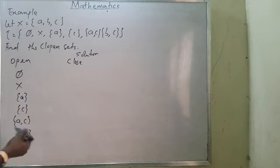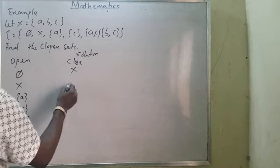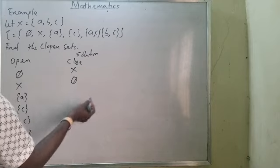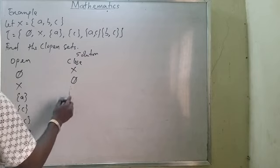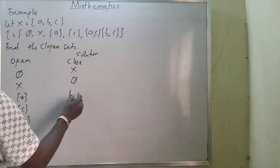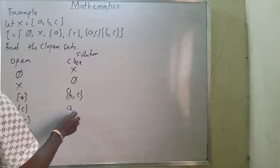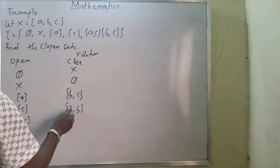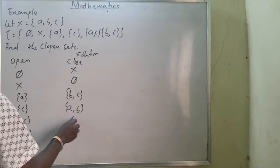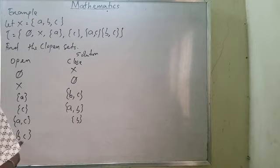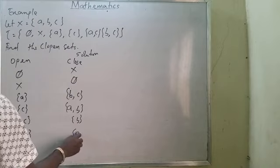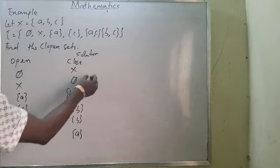My closed sets: I start with X and ∅. I've explained this in my previous video — the closed set is obtained by taking the complement of each open set. It means the complement of the set within X gives us the closed sets.